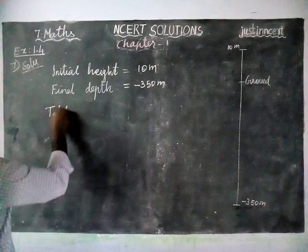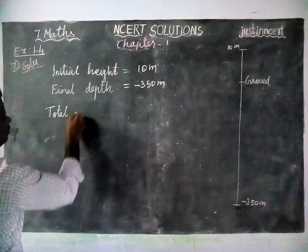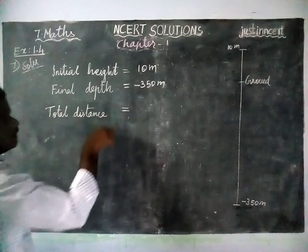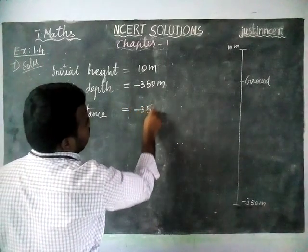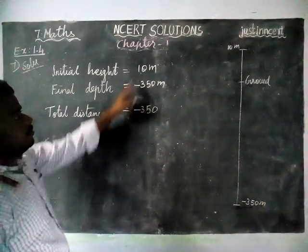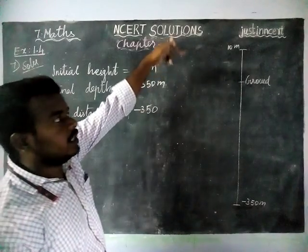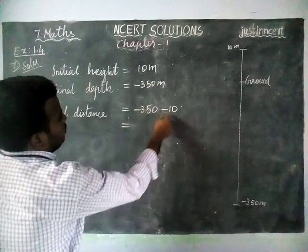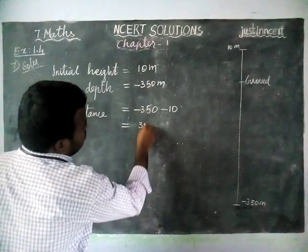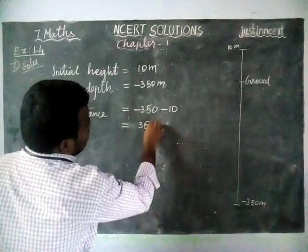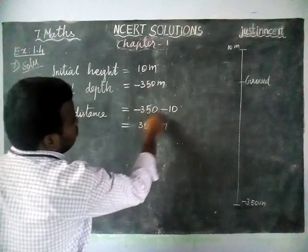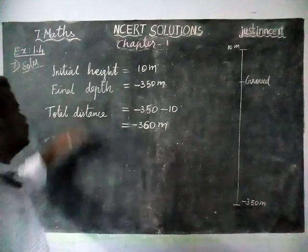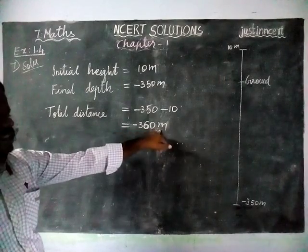The total distance — listen carefully — is 350 meters below the ground level, and the elevator started from 10 meters above, so we take that as minus 10. When we add these two numbers, both are minus, so we add them: minus 360 meters. From the starting point to the depth point is minus 360 meters.